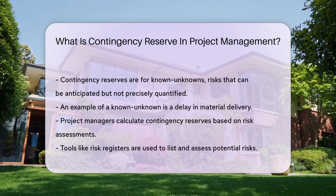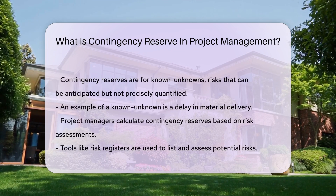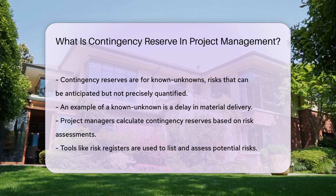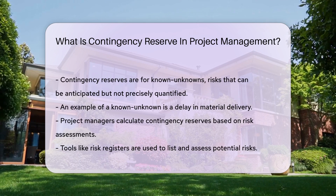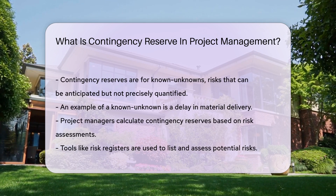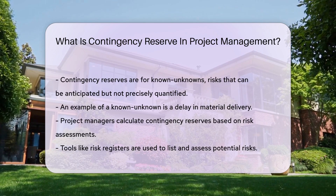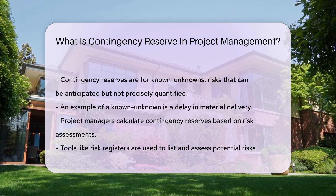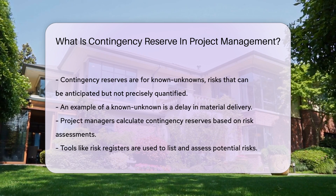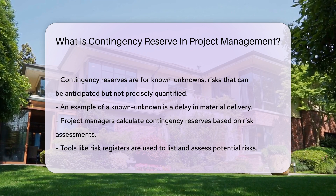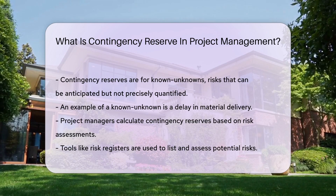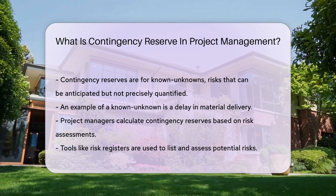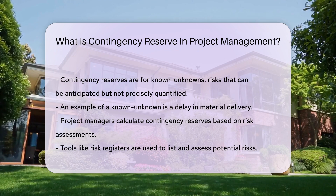Project managers calculate contingency reserves based on risk assessments. They use tools like risk registers, which list potential risks and assess their impact and likelihood. Based on this, a percentage of the project budget is set aside. This percentage varies from project to project, depending on the level of risk involved.